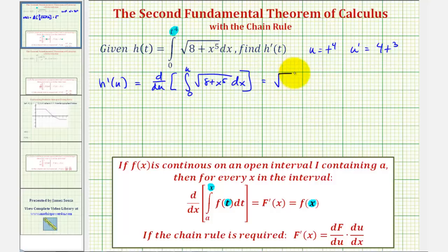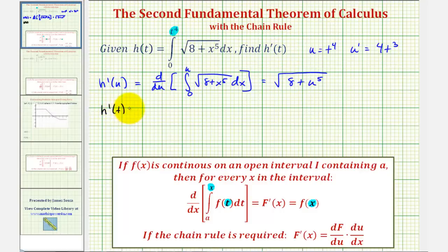This would be equal to the square root of eight plus u to the fifth. But our goal is not to find h prime of u — our goal is to find h prime of t. So if we apply the chain rule, h prime of t, or dh/dt, would be equal to dh/du, which we just found, times du/dt.